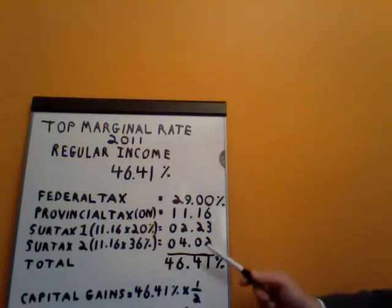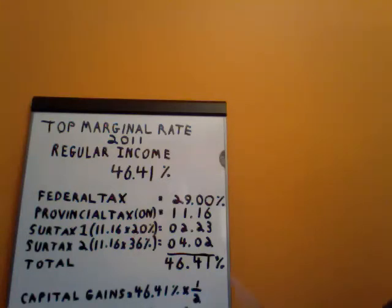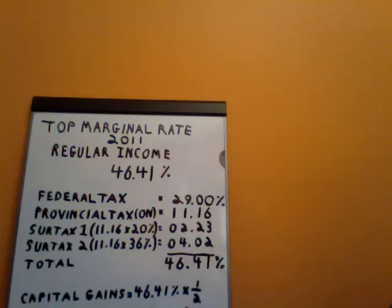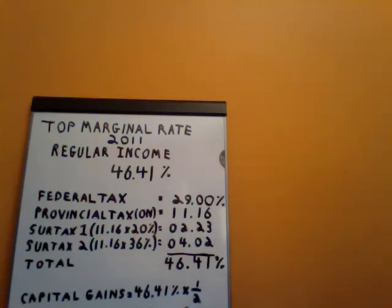Now we have two surtaxes in Ontario to deal with. Essentially a surtax is tax on a tax. If we have earned $66,514 or more in Ontario in 2011, for every dollar of provincial tax you pay, you must pay an additional 20% surtax number one. This would work out to an additional 2.23%.